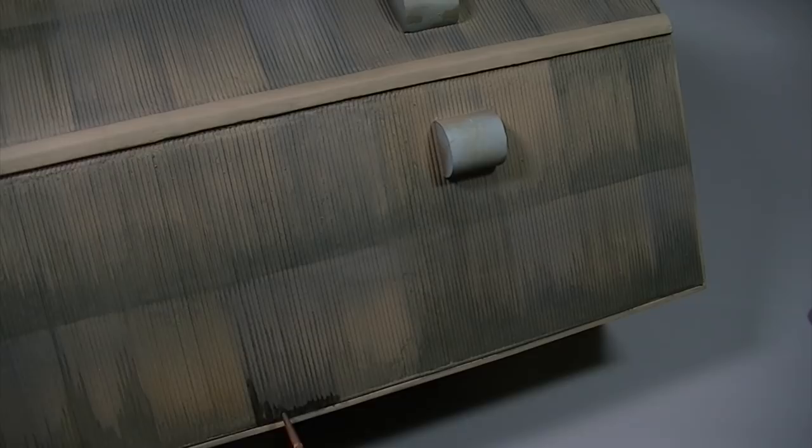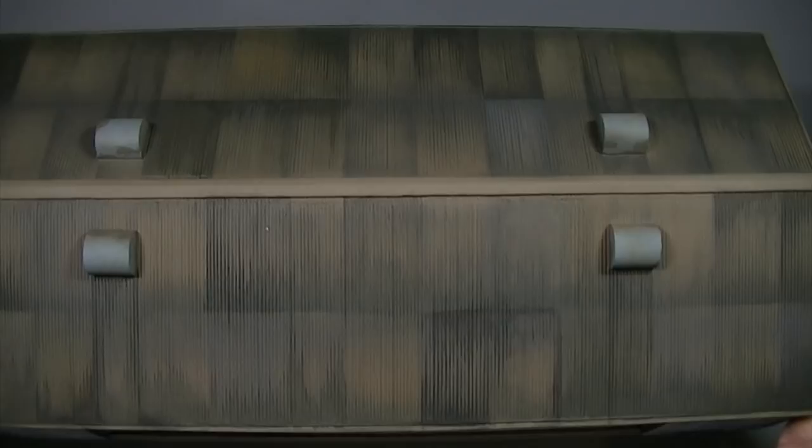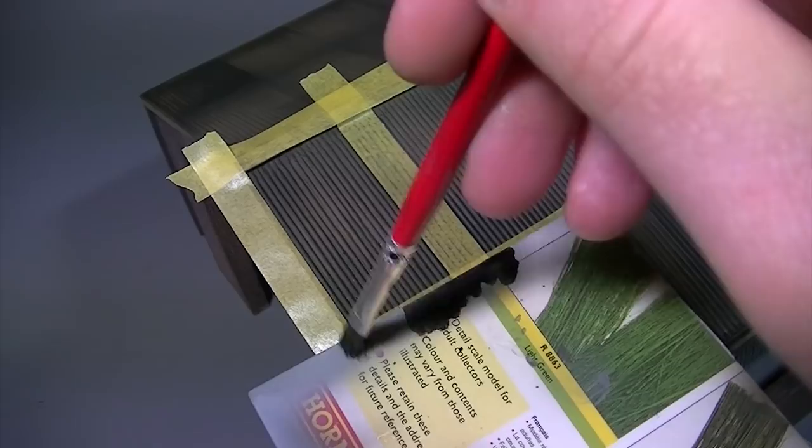By selecting certain areas of the roof to treat with the black wash as opposed to applying it all over we can give the impression of certain panels being replaced over time and other panels being in place for much longer. This variation helps to keep things interesting on what otherwise would have been a big flat area which is all the same colour.